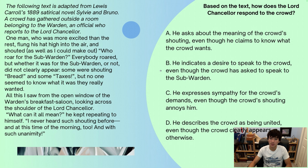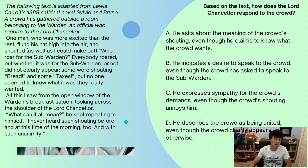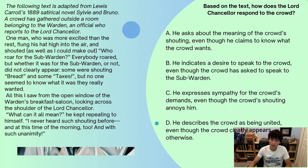Answer B: He indicates a desire to speak to the crowd, even though the crowd asked to speak to the subwarden. Does he indicate an actual desire to speak to the crowd? He seems pretty nervous, but there's no real indication that he wants to speak to the crowd — that would be an assumption. Answer C: He expresses sympathy for the crowd's demands, even though the crowd's shouting annoys him. The 'annoys him' part is also an assumption — it's never actually stated.